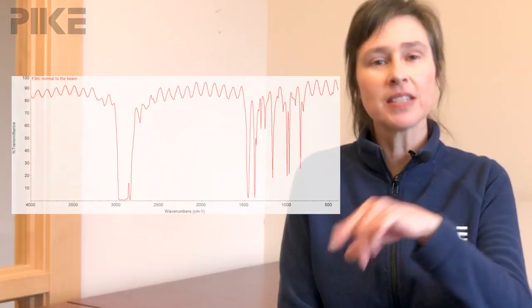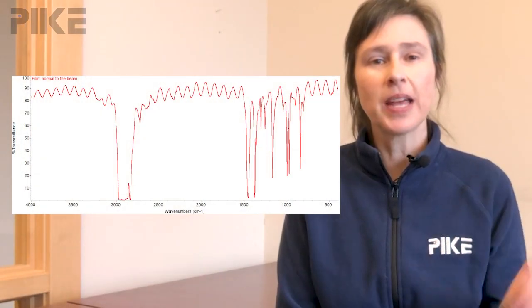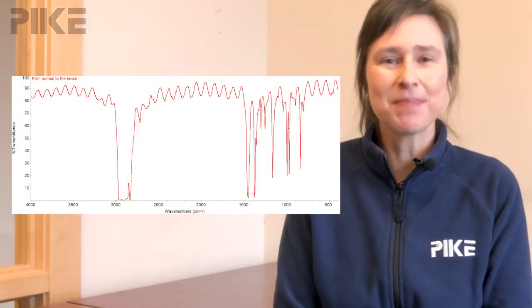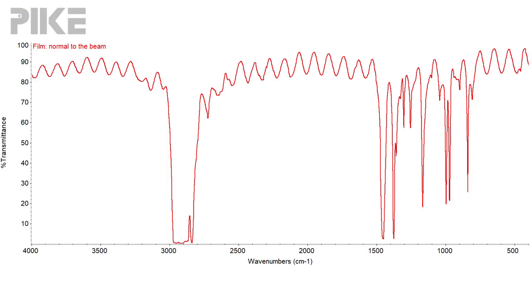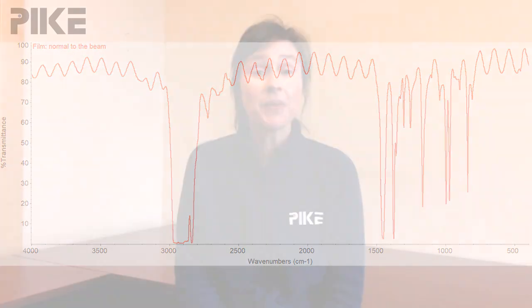Hello and welcome! Let's start right off by looking at a spectrum of a thin film in transmission. You'll notice the sinusoidal wave running through the spectrum, and this is caused by the beam reflecting off the surfaces of the film.